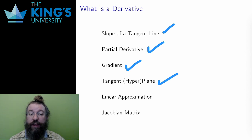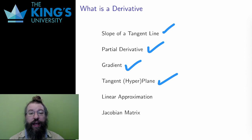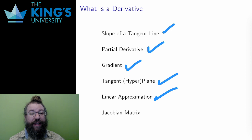Finally, in this video, I got the idea that the derivative is the best linear approximation of the function, and that linear approximation, at least up to a shift, is described by the matrix of partial derivatives, which I called the Jacobian matrix.